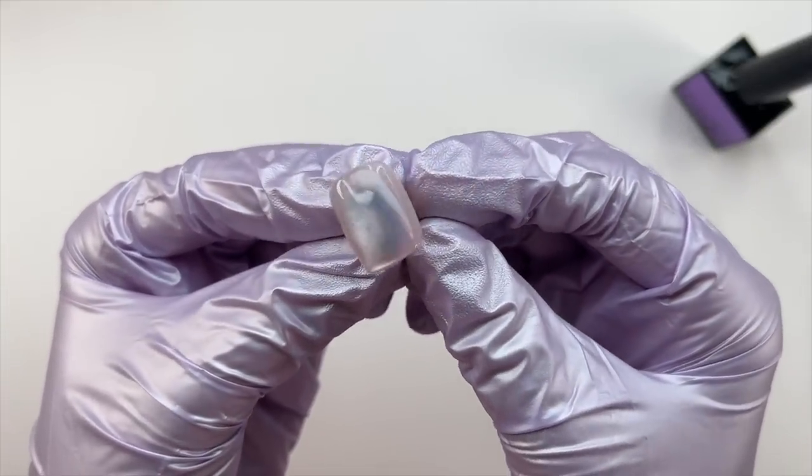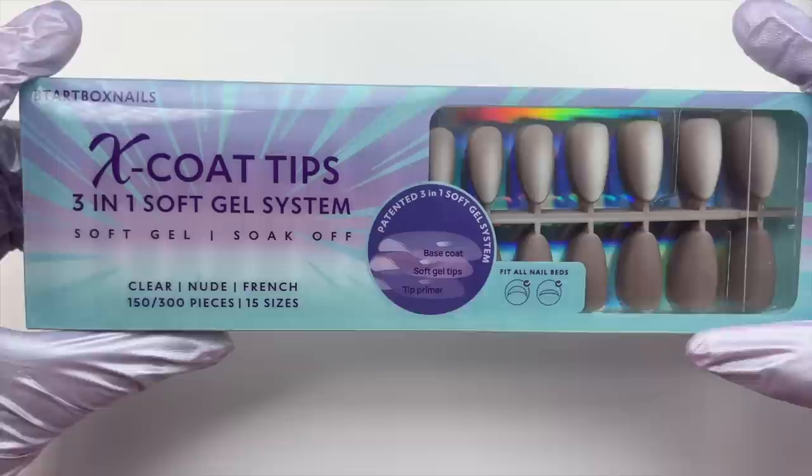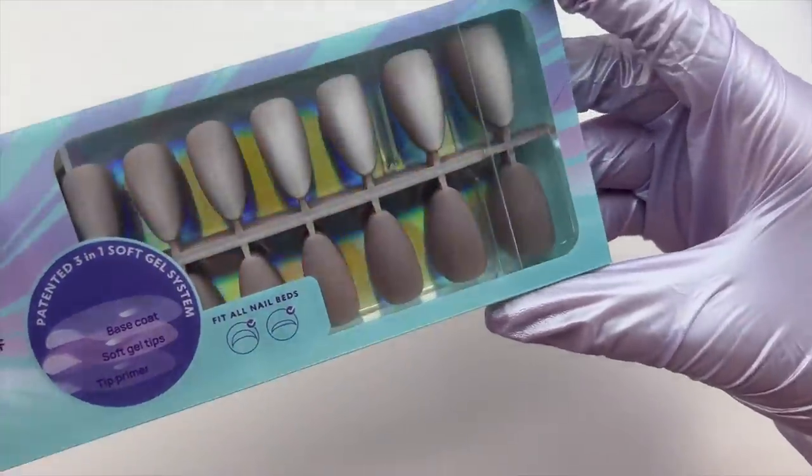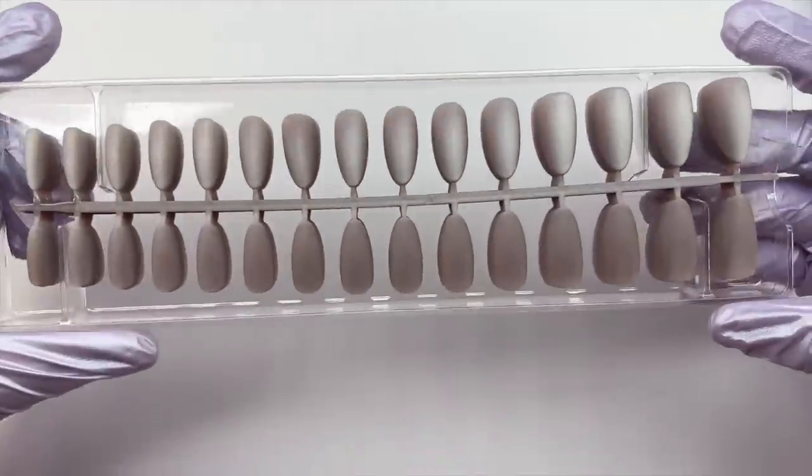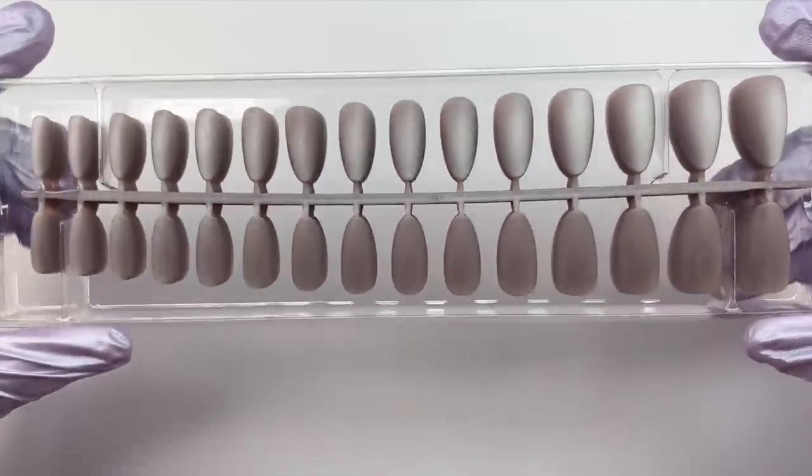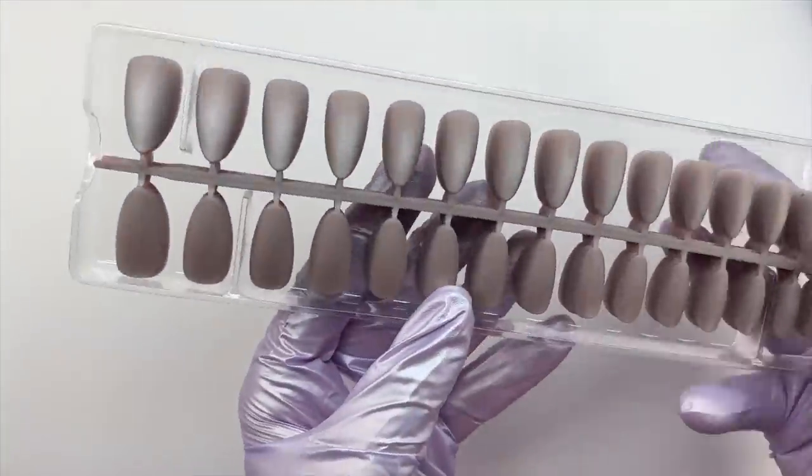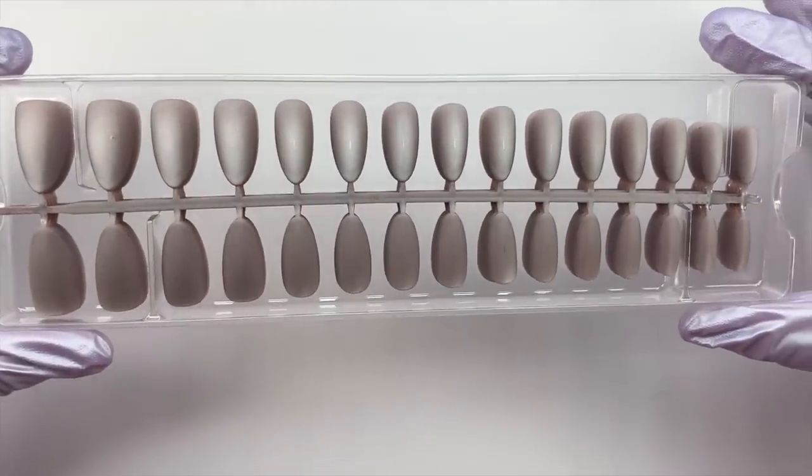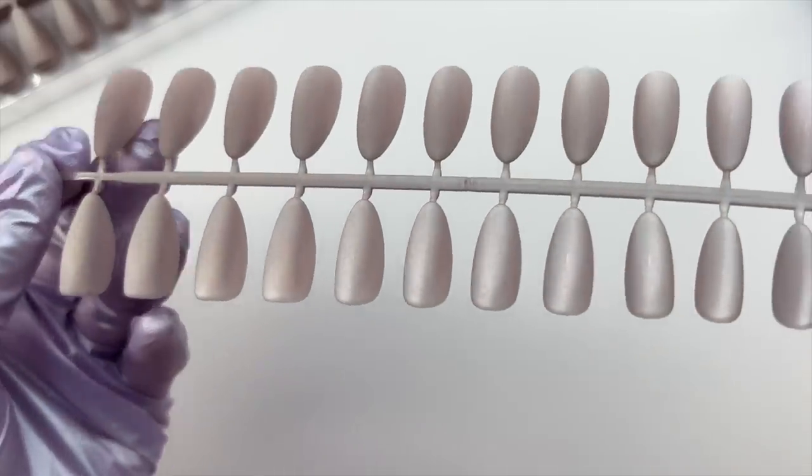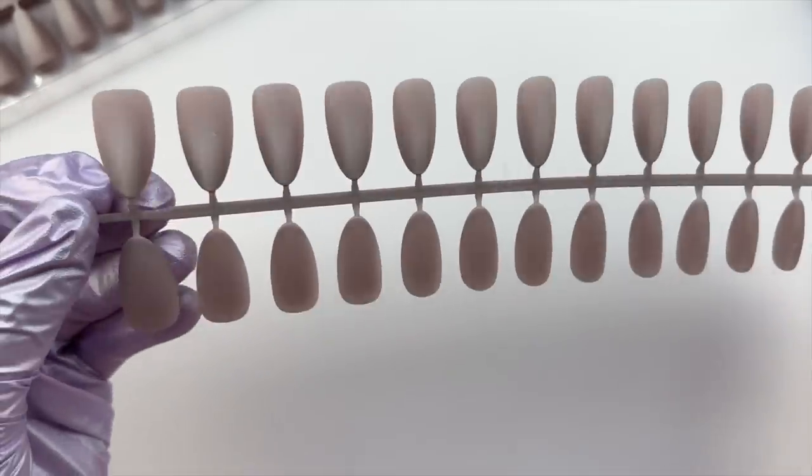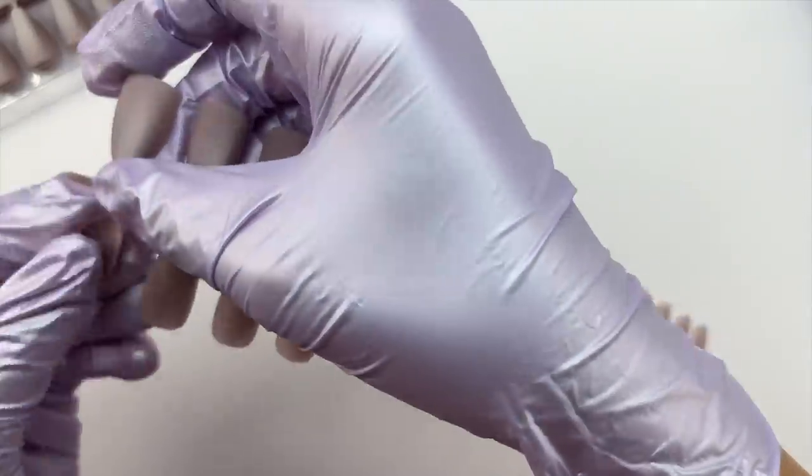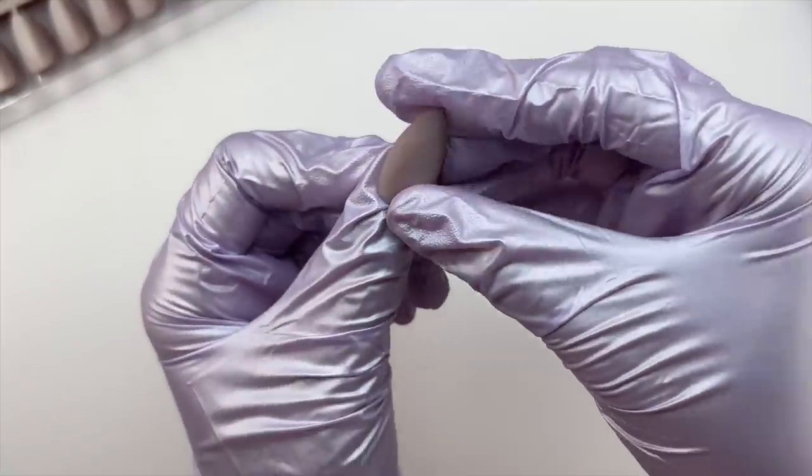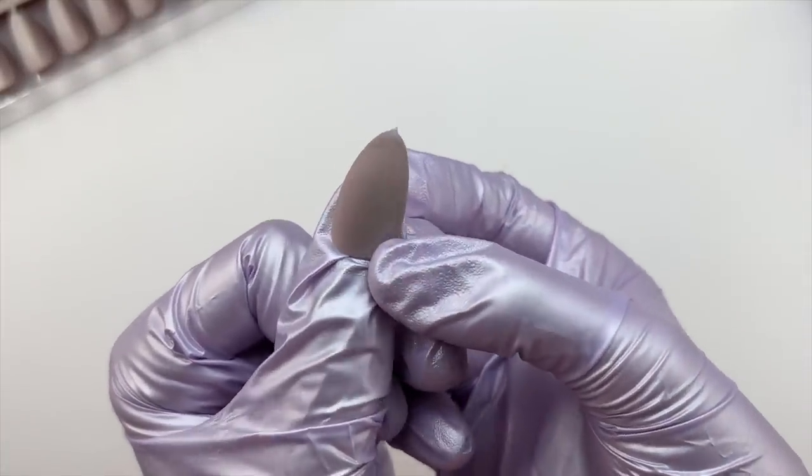I personally do prefer a thinner cuticle area just because you do get a more seamless look, and with these you cannot really file them because if you do file the top you will file off the cat eye effect. So that is one downfall for me, was that the cuticle area wasn't as thin as I do like it, but I still was able to get a very nice looking realistic nail set out of these.